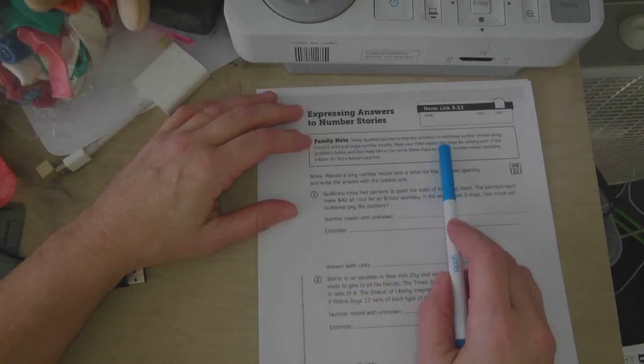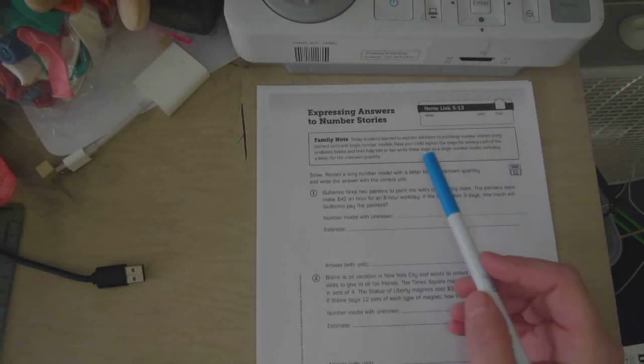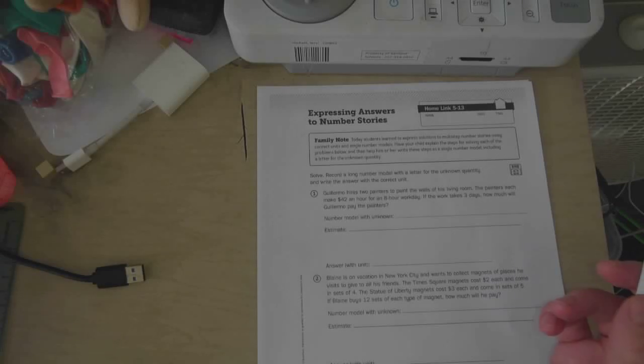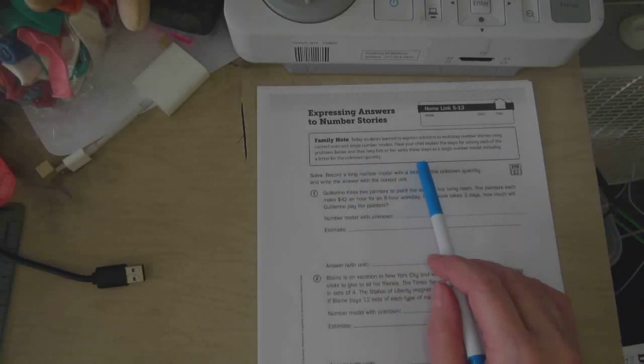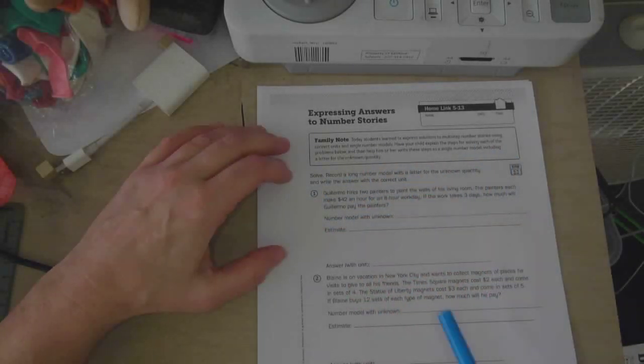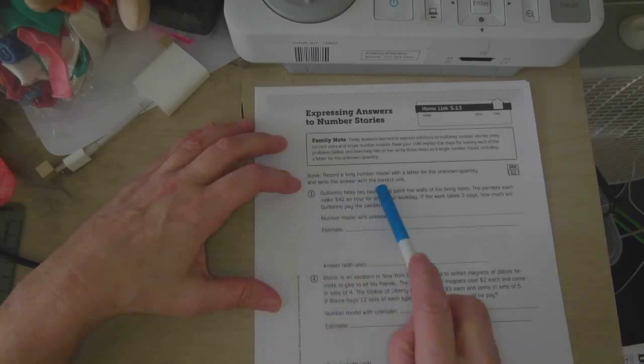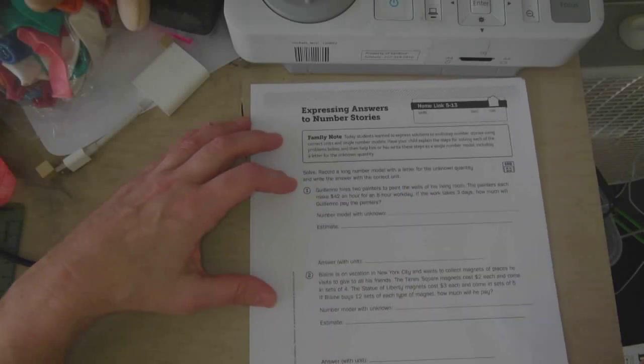Today, students learned to express solutions to multi-step number stories using correct units and single number models. Have your child explain the steps for solving each of the problems below and then help him or her write these steps as a single number model, including a letter for the unknown quantity. Solve. Record a long number model with a letter for the unknown quantity and write the answer with the correct unit.